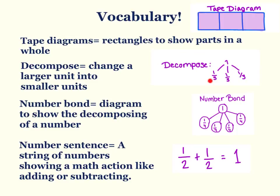Next is number bond, and this is a diagram to show the decomposing of a number. We have one as our larger unit and it's decomposed into four smaller units, or one-fourths. And lastly is our number sentence — a string of numbers showing a math action like adding or subtracting. So we have one-half plus one-half equals one, and that's a number sentence showing adding.